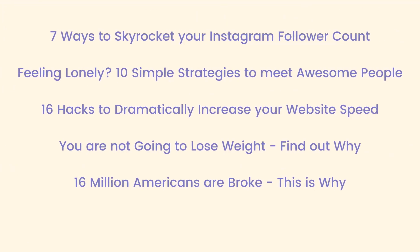Let's look at some examples. 'Seven ways to skyrocket your Instagram follower count' — the number is seven, the content is 'ways,' the emotional hook is 'skyrocket,' and the subject is Instagram followers. 'Feeling lonely? Ten simple strategies to meet awesome people' — 'feeling lonely' is the emotional hook, ten is the number, 'simple strategies' is the content type, and 'meet awesome people' is the subject. '16 hacks to dramatically increase your website speed' — 16 is the number, 'hacks' is the content, and 'dramatically increase' is the emotional hook.